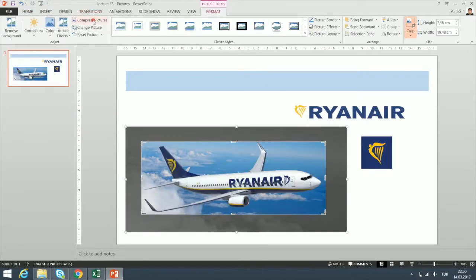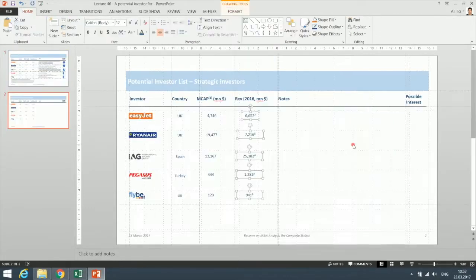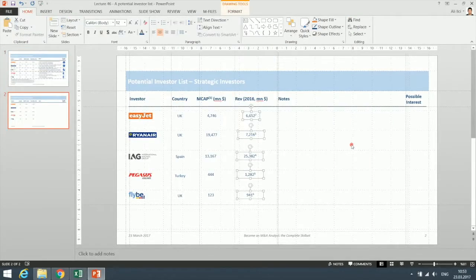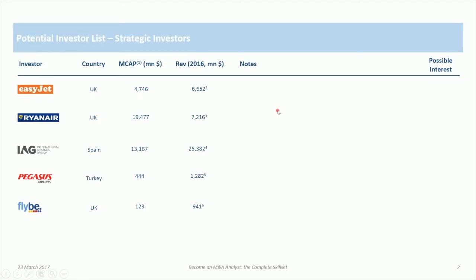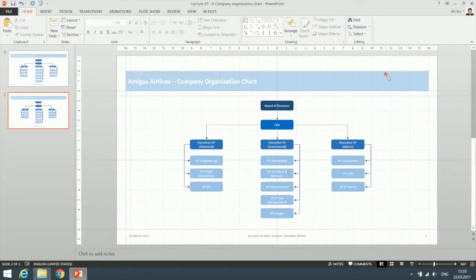Then we will learn how to manage headers and footers. And finally, with all the skills we learned throughout this section, we are going to create two important documents in the world of investment banking: a potential investor list and a company organization chart.